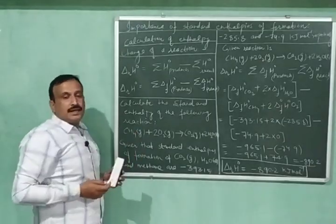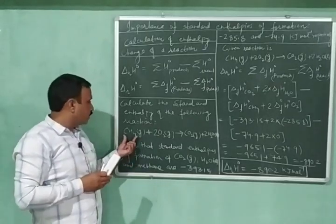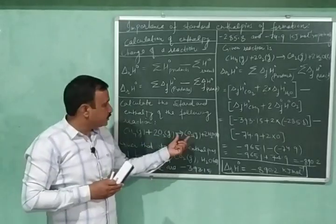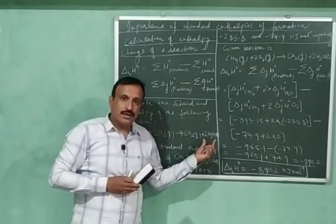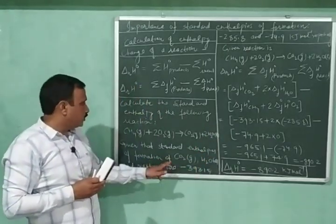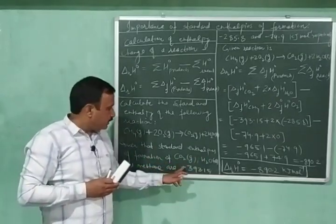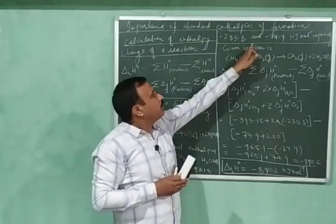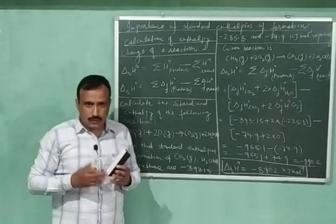Let us understand this with the help of a numerical problem. We have a reaction in which one mole of methane is oxidized by two moles of oxygen, giving one mole of carbon dioxide and two moles of water. The standard enthalpies of formation of carbon dioxide, water, and methane are given as -393.15, -285.8, and -74.9 kJ/mol respectively.